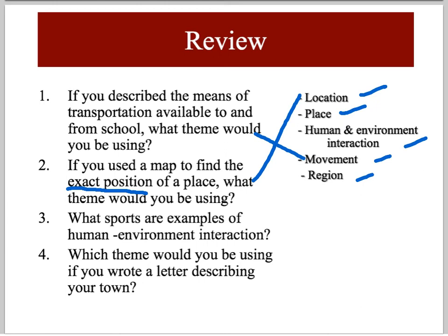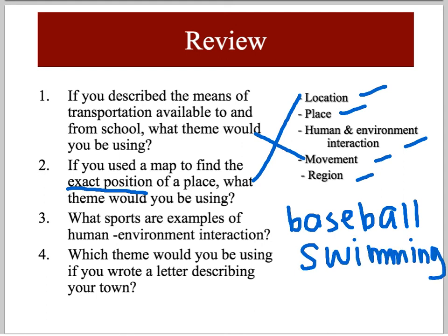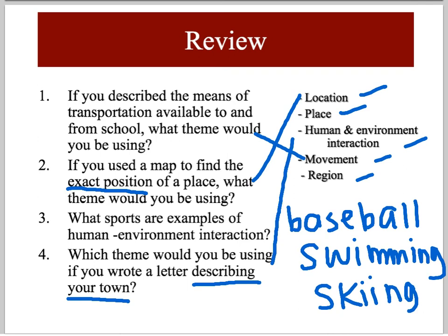Question three: what sports are examples of human environment interaction? Think about how the environment determines which kinds of sports you can play in that location. If you thought of baseball, swimming, or even skiing, you're on the right track. Last question: which theme would you be using if you wrote a letter describing your town? The key words are describing your town. If you guessed place, you're correct. Remember, place is about the characteristics of a location, while location talks about the exact position — those can be tricky, so try to keep them separate.